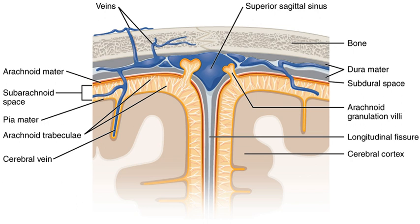The arachnoid is composed of an outermost portion — the arachnoid barrier cell layer — with tightly packed cells and no extracellular collagen. That is why it is considered to represent an effective morphological and physiological meningeal barrier between the cerebrospinal fluid and subarachnoid space and the blood circulation in the dura. The arachnoid barrier layer is characterized by a distinct continuous basal lamina on its inner surface toward the innermost collagenous portion of the arachnoid reticular layer.